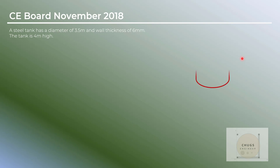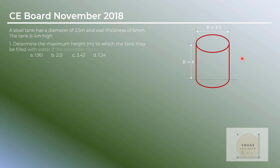This is the steel tank — 4 meters high and 3.5 meters in diameter, with a wall thickness of 6 millimeters. Question number one: determine the maximum height in meters to which the tank may be filled with water if the allowable stress is 5.5 megapascal.